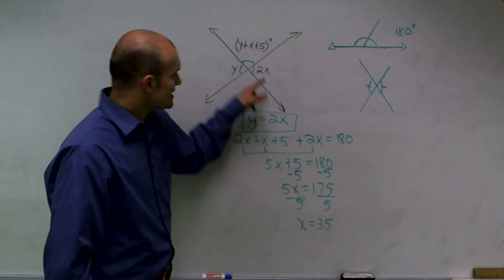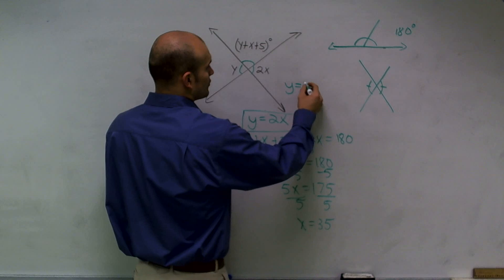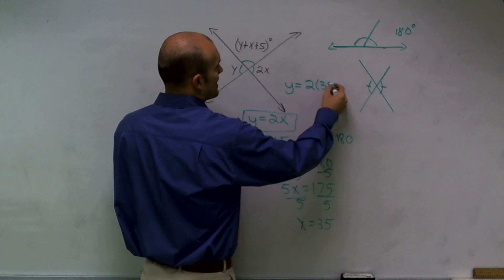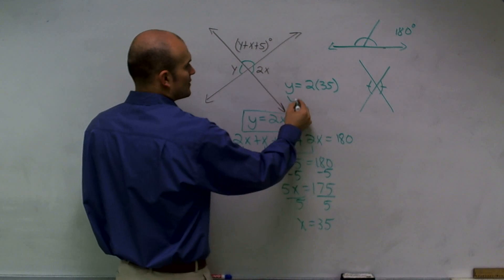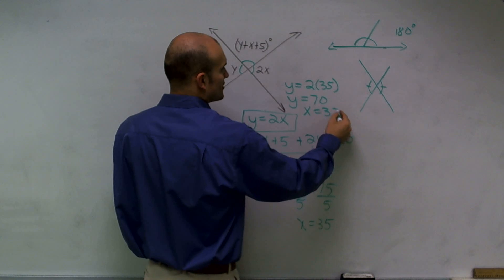If x equals 35, remember y equals 2 times x. So y equals 2 times 35. Therefore, y equals 70 and x equals 35.